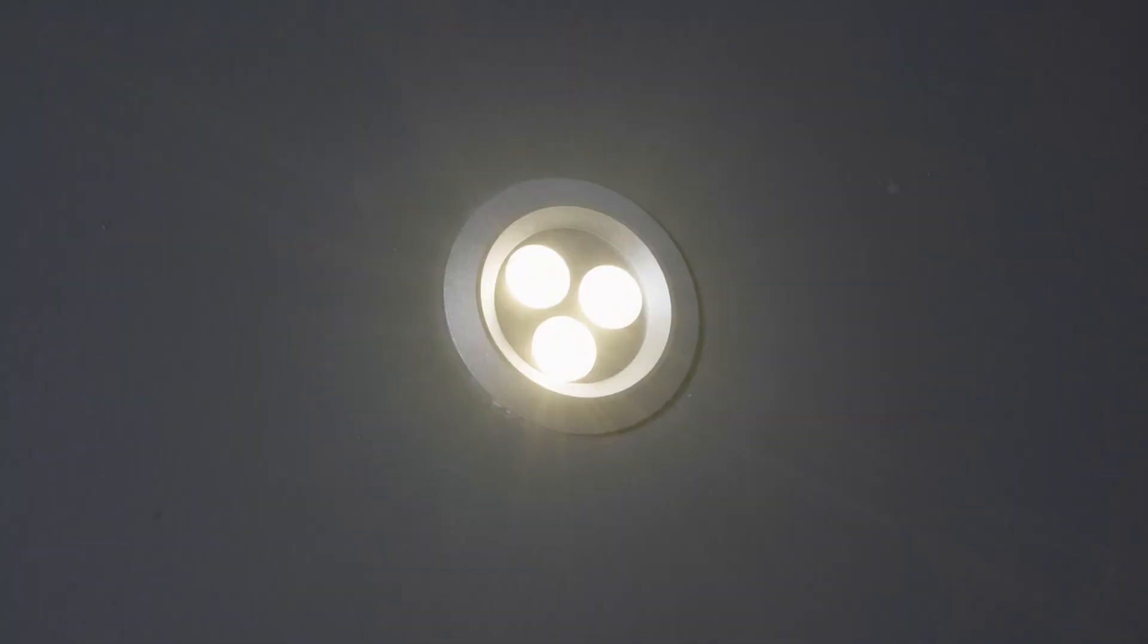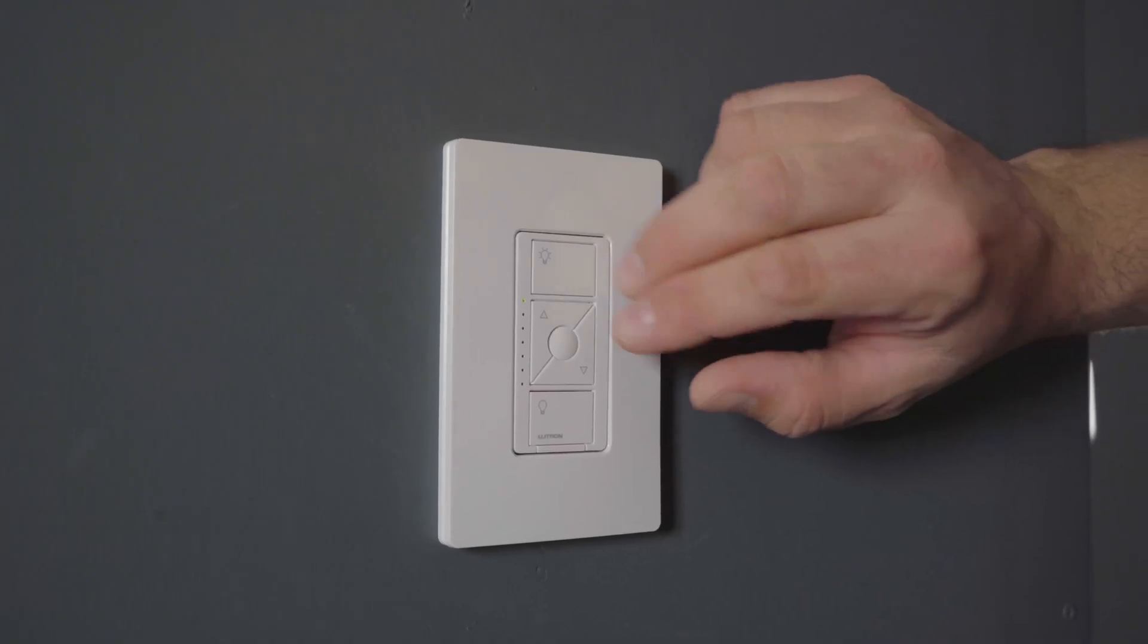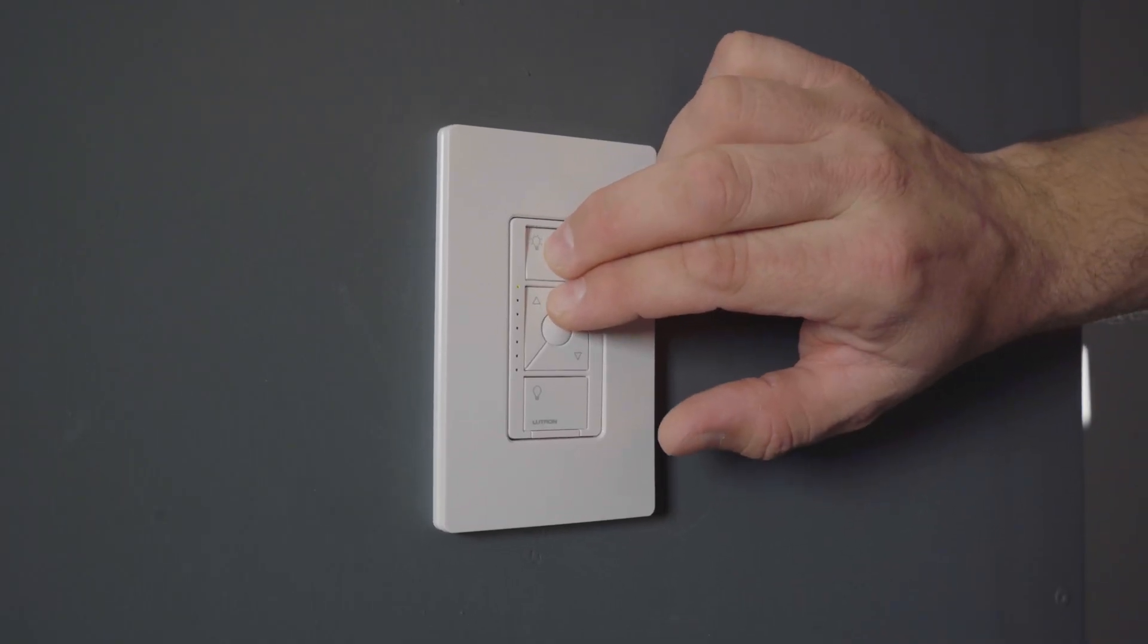Now to set the high level trim, just start with the light at the top level that you want. Press the on button and the brighter button at the same time for six seconds.